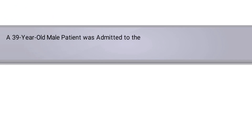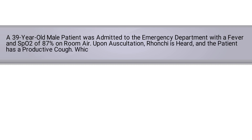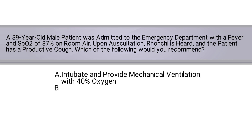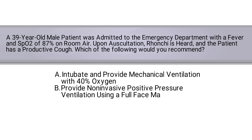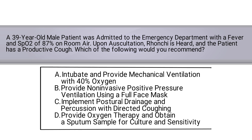A 39-year-old male patient was admitted to the emergency department with a fever and SpO2 of 87% on room air. Upon auscultation, ronchi is heard and the patient has a productive cough. Which of the following would you recommend? A) Intubate and provide mechanical ventilation with 40% oxygen. B) Provide non-invasive positive pressure ventilation using a full face mask. C) Implement postural drainage and percussion with directed coughing. Or D) Provide oxygen therapy and obtain a sputum sample for culture and sensitivity.